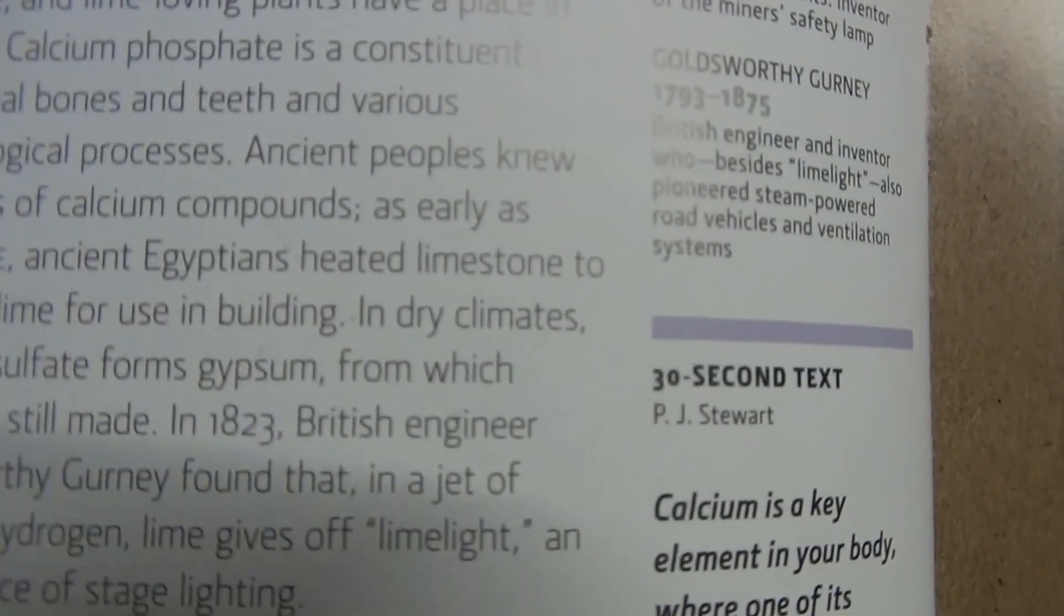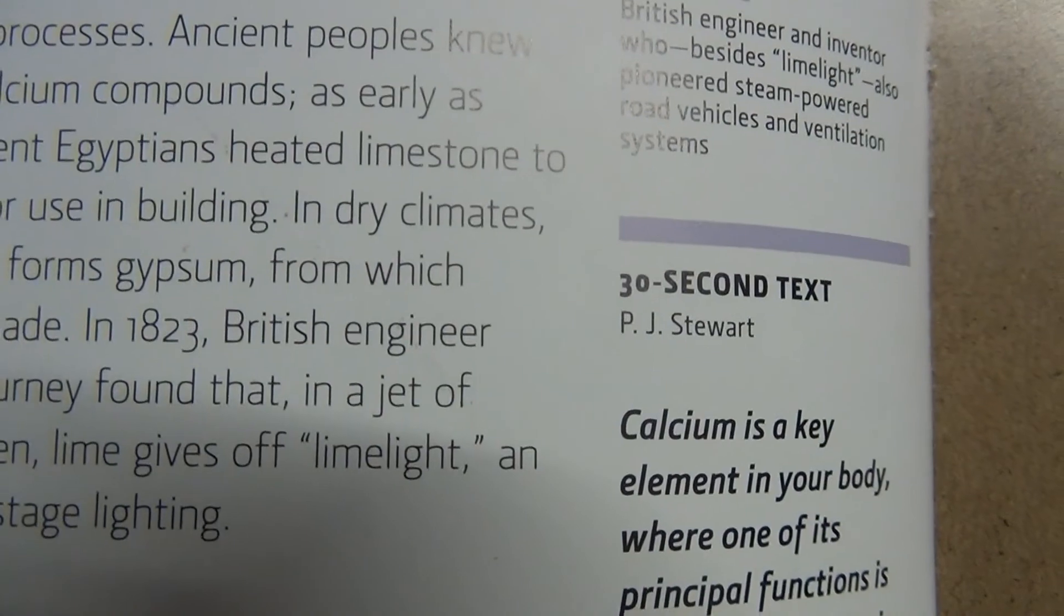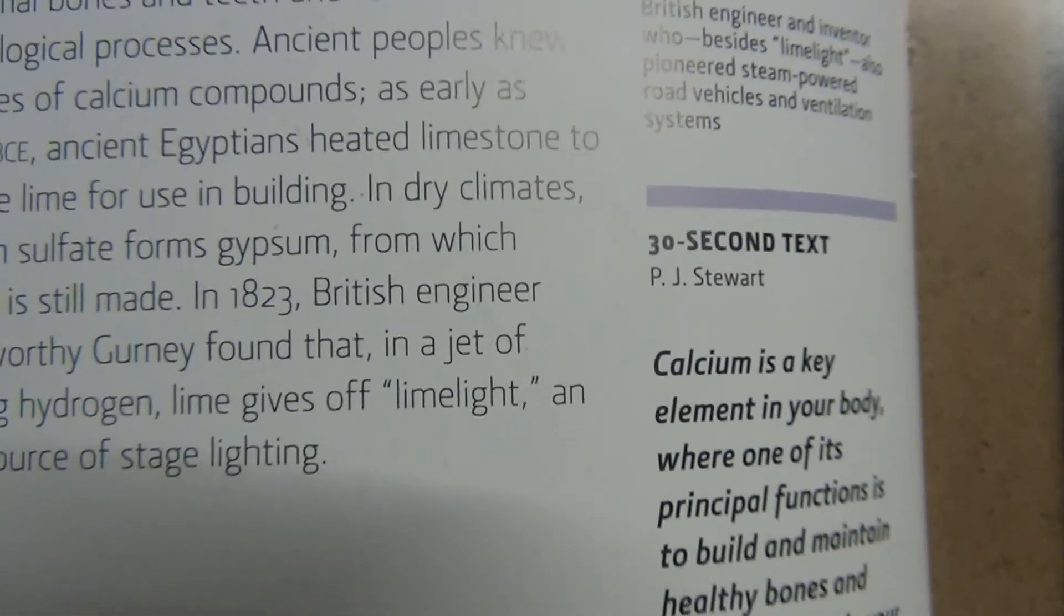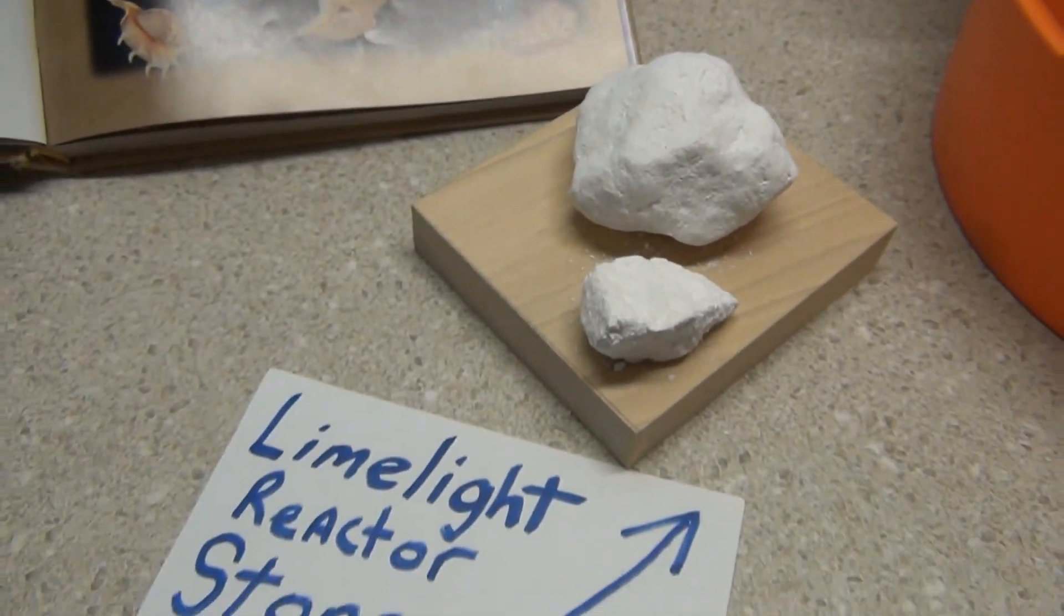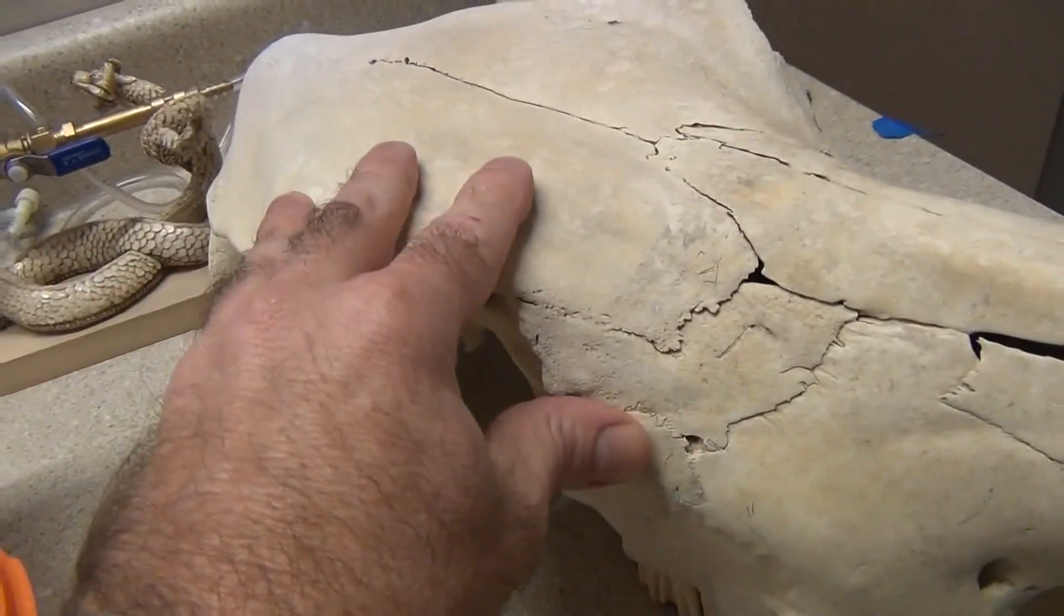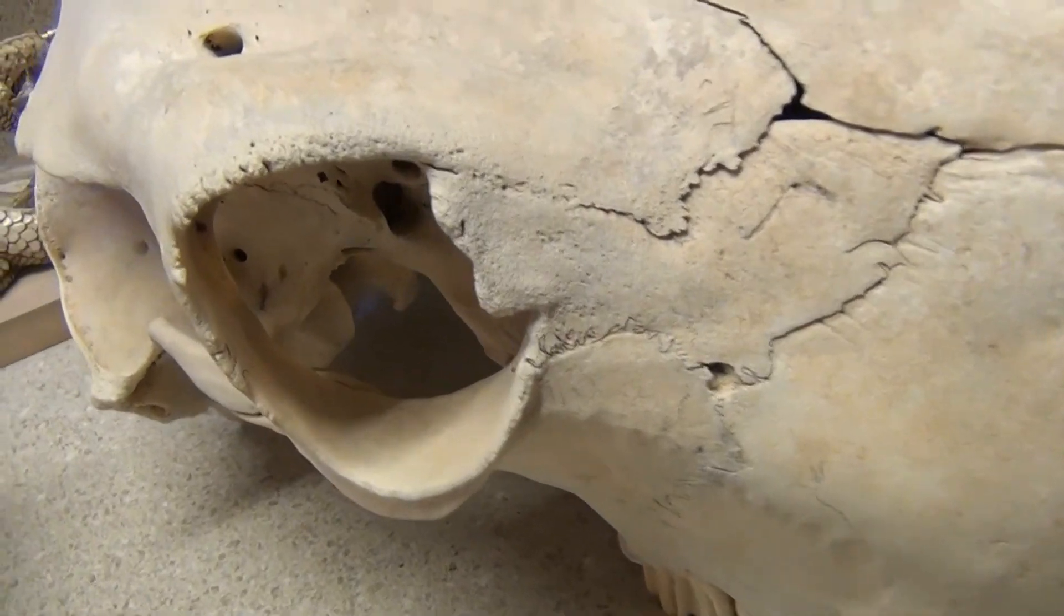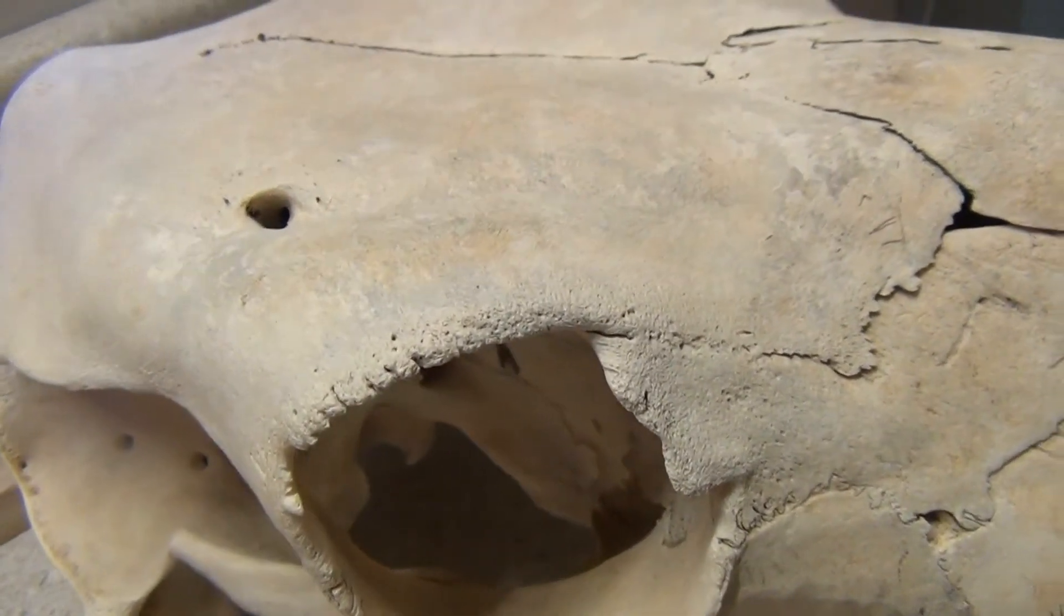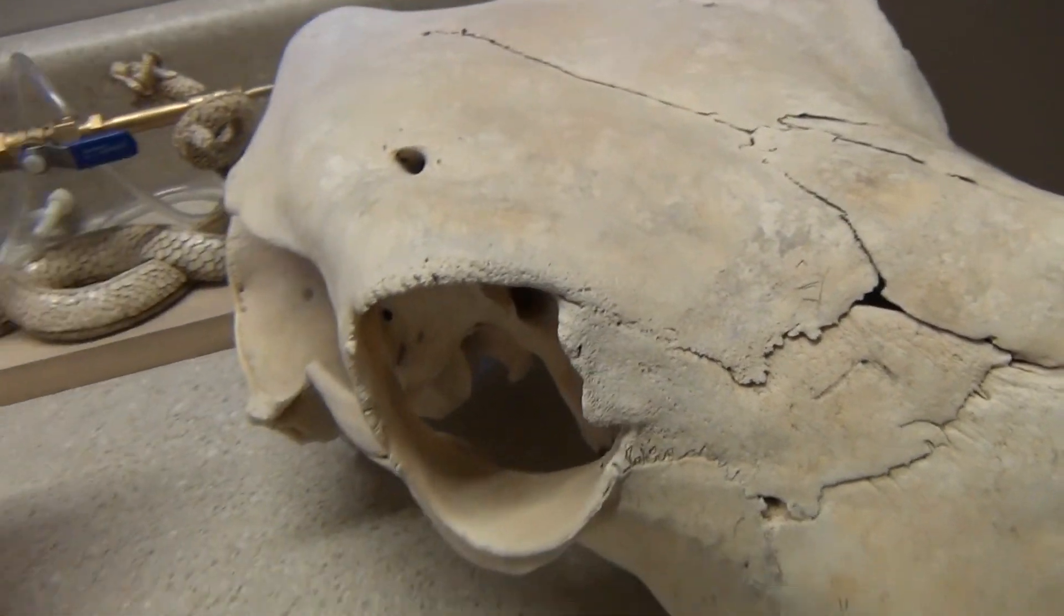So ancient peoples knew. The Egyptians heated limestone to prepare lime for use in buildings and dry climates. And it's also part of your body. It's the most main element. Calcium, your teeth, your entire shell is made of this element.